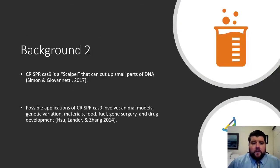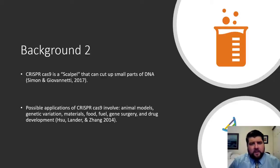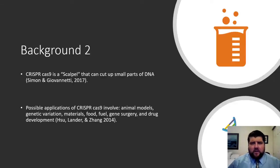CRISPR-Cas9 is a scalpel rather than other genetic engineering techniques, which are more like a blacksmith. CRISPR-Cas9 is able to cut DNA up into small little bits, whereas genetic engineering tools of the past were more like a hammer and tongs hitting on an anvil. It worked, but it was more crude and less effective.